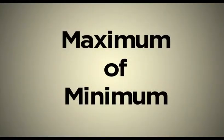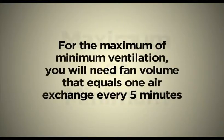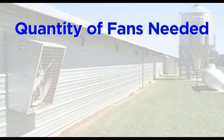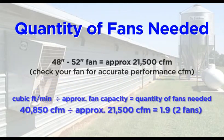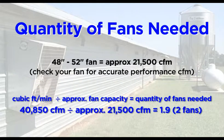For the maximum of minimum ventilation, you will need fan volume that equals 1 air exchange every 5 minutes. To determine the number of fans needed, take the cubic volume of the house and divide by 5. Then divide 40,850 — the cubic volume of the house divided by 5 — by the amount of air one summer fan can displace in cubic feet per minute. Always round up or down to the nearest whole number.